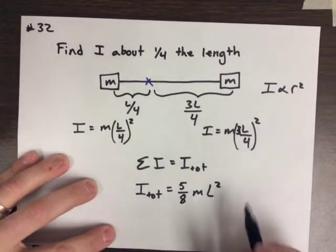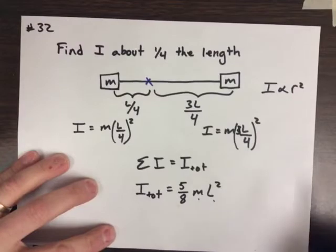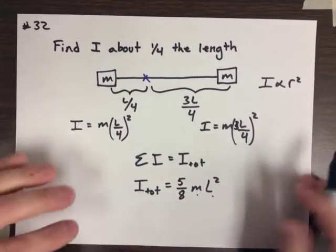Now, what you're going to notice for a lot of moments of inertia, you're going to have typically a coefficient times m times the length squared. And this is going to play true in our next problem as well.